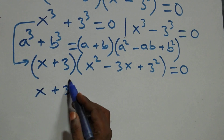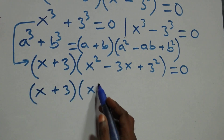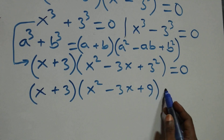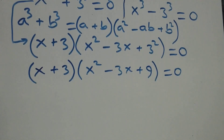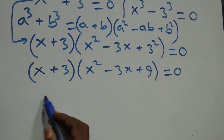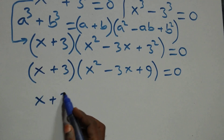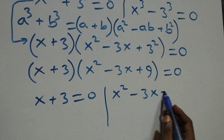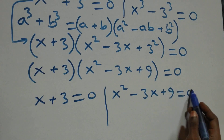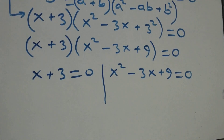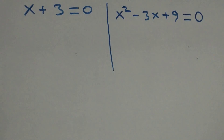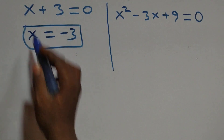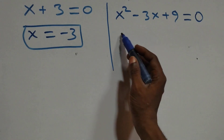So in open bracket: x squared minus 3x plus 3 squared, close bracket, equals 0. This gives us two possible cases: x plus 3 equals to 0, or x squared minus 3x plus 9 equals to 0. Solving the first gives x equals to minus 3, which is a real solution.